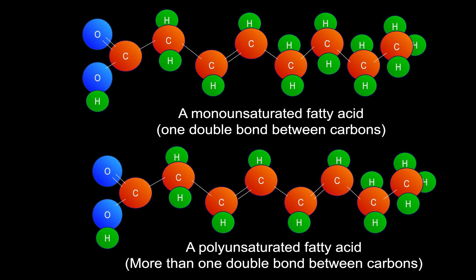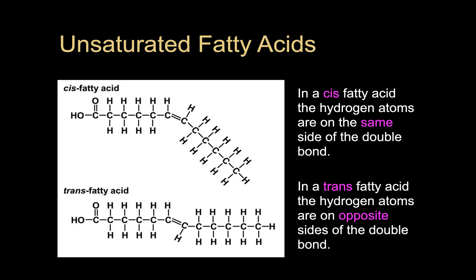When we have unsaturated fatty acids, the arrangement of the hydrogen atoms around that double bond can be slightly different — we can have two kinds of arrangements. A cis unsaturated fatty acid is where the hydrogens are on the same side of the double bond, as you can see in the top molecule. Or you can have a trans unsaturated fatty acid, where the hydrogen atoms are on opposite sides. To clarify, cis and trans are referenced to unsaturated fatty acids — you wouldn't have this arrangement in a saturated fatty acid because there isn't a double bond in the carbon chain.